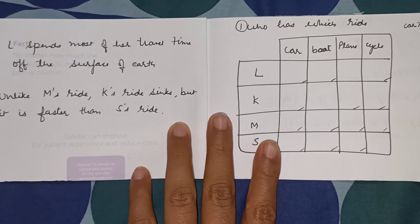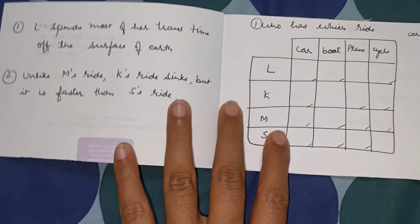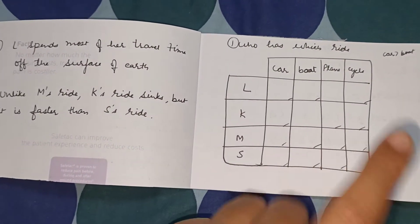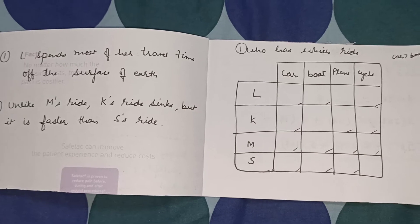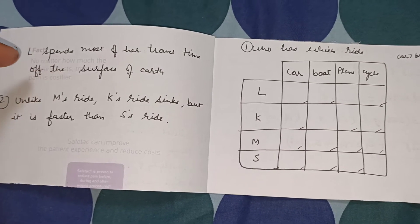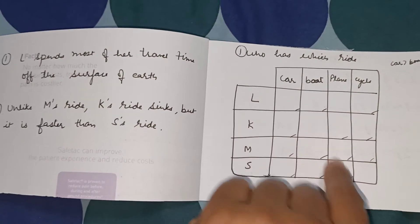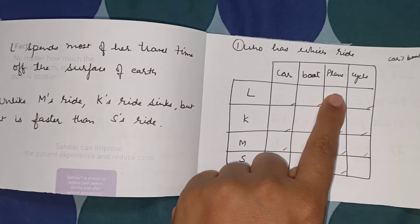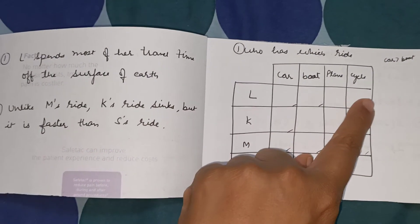These are simple critical thinking questions from the website criticalthinking.co. So here it is: there are 4 people, 4 rides — who has which ride. This question is very easy, a very beginner level critical thinking question. Like, L spends most of the time traveling off the surface of earth, which means L will have the plane. So I've tested it myself. When you put a tick here, all the others get crossed.